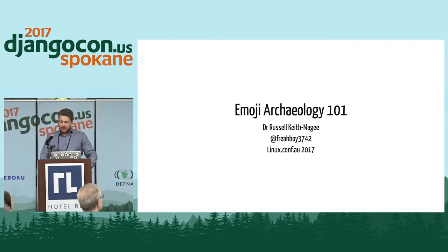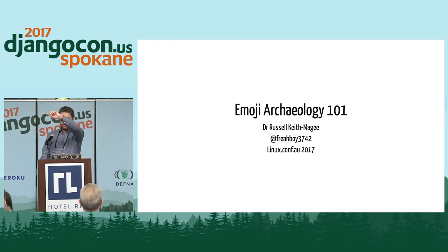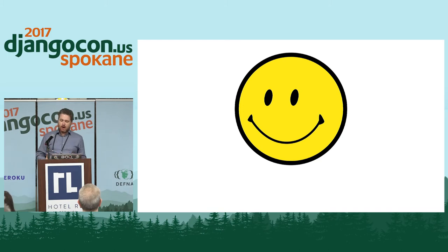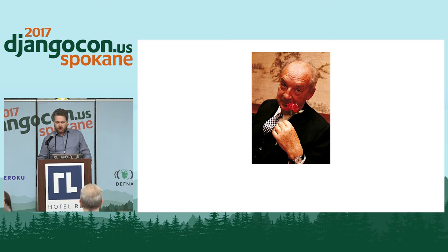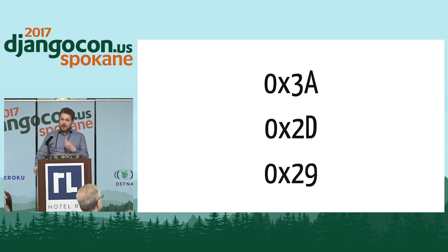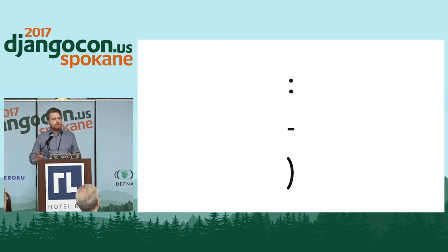Good afternoon, class. I'm Dr. Russell Keith-McGee. This is Emoji Archaeology 101. In 1963, the human emotion of happiness was created by Harvey Ross Ball, who was employed to create an image of a happy face to raise employee morale at an insurance company. In a New York Times interview in April 1969, Vladimir Nabokov said, 'I often think there should exist a special typographical sign for a smile, some kind of concave mark, a supine round bracket.' In 1982, Scott Farnland proposed a composition of three ASCII characters as a trigraph to express happiness.